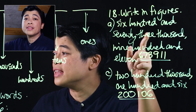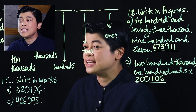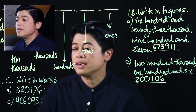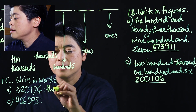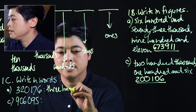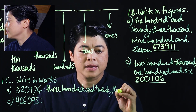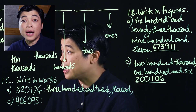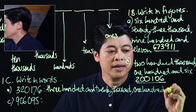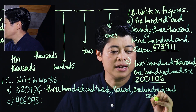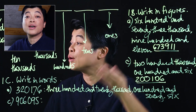Now problem 1c says 'write in words.' Reading the number 320,176 — this is three hundred and twenty thousand, one hundred and seventy-six. So we write 'three hundred and twenty thousand,' then put the comma, then 'one hundred and seventy-six.' The way that we write should be the same as the words given to us.